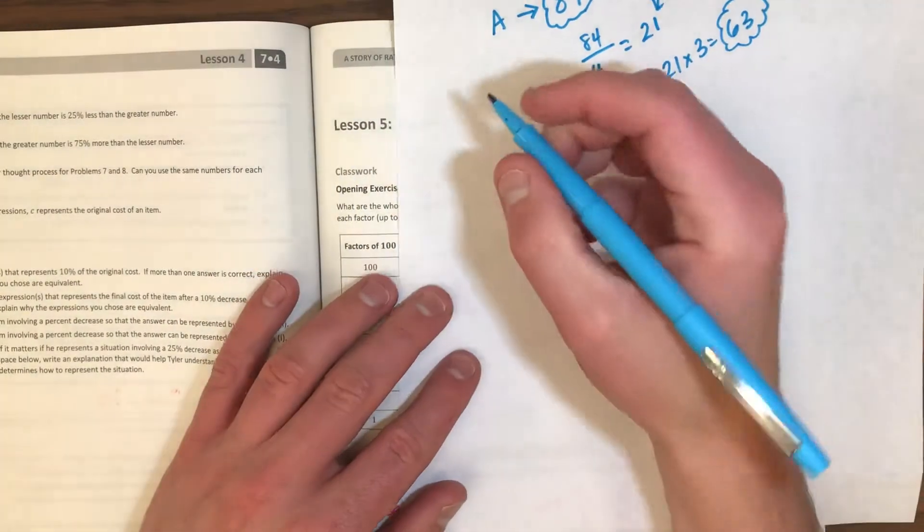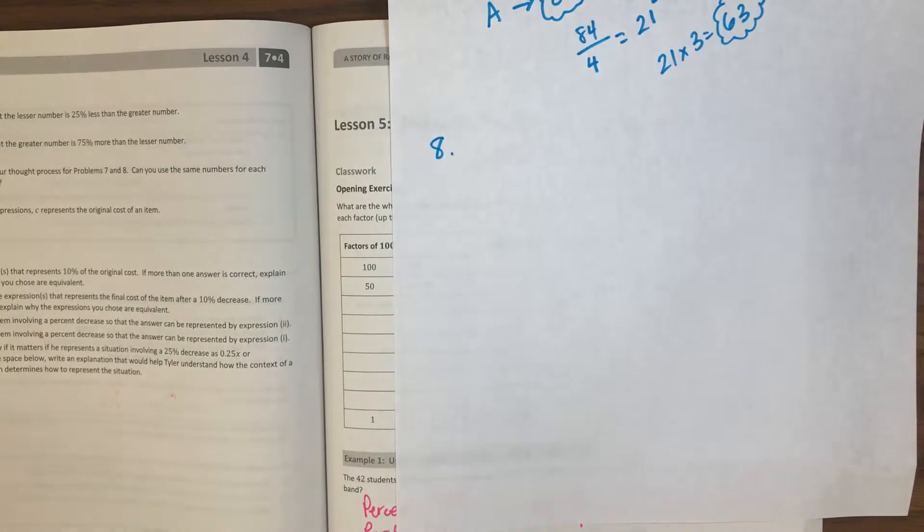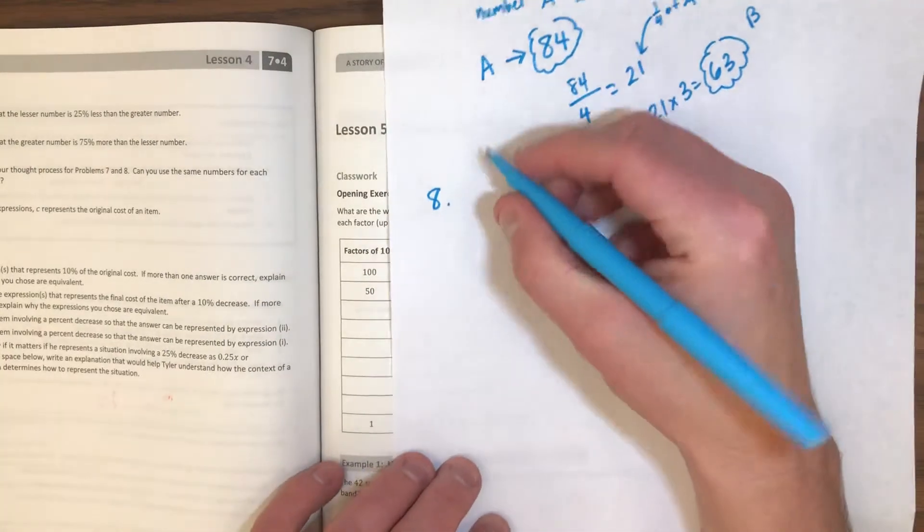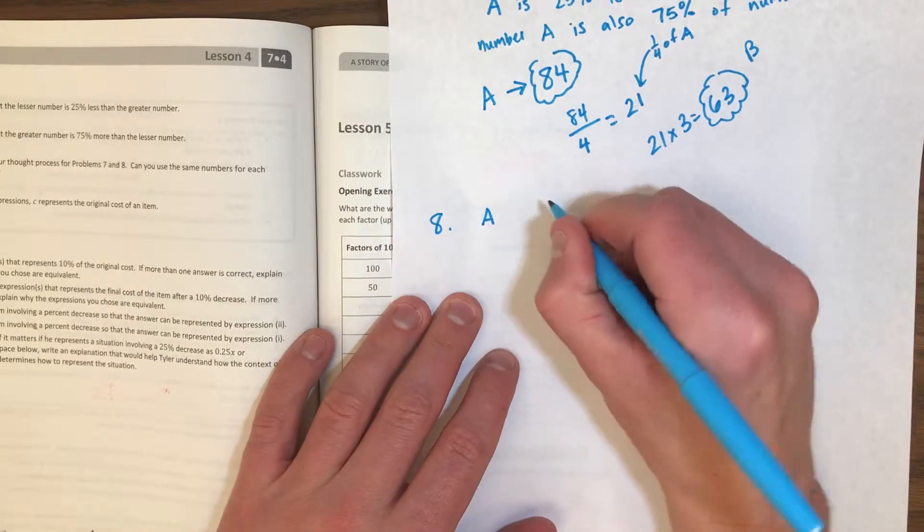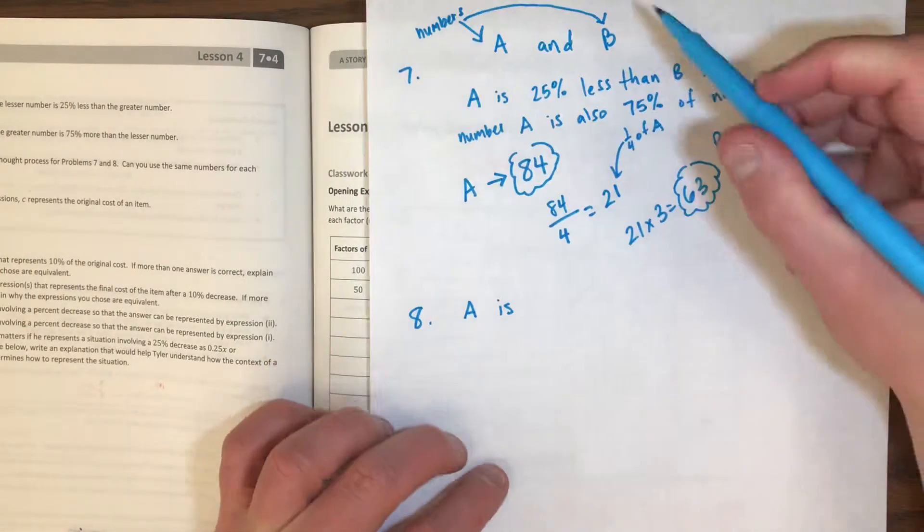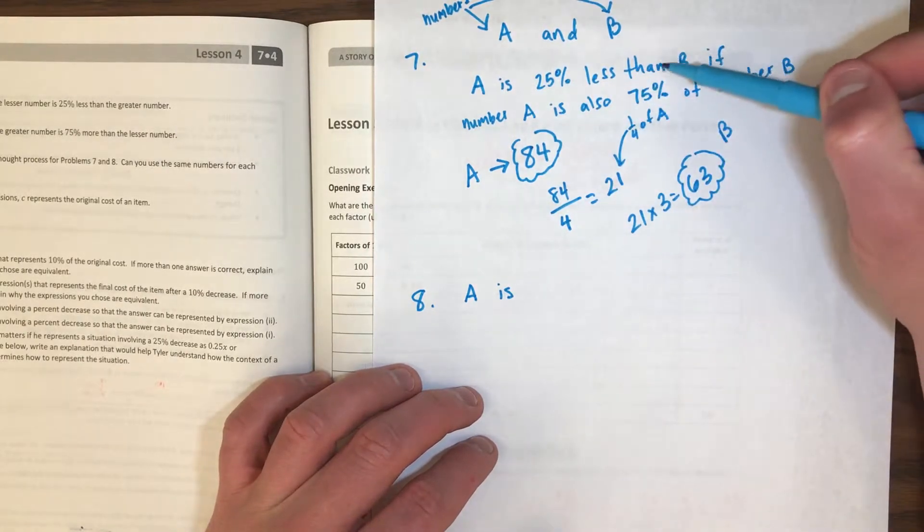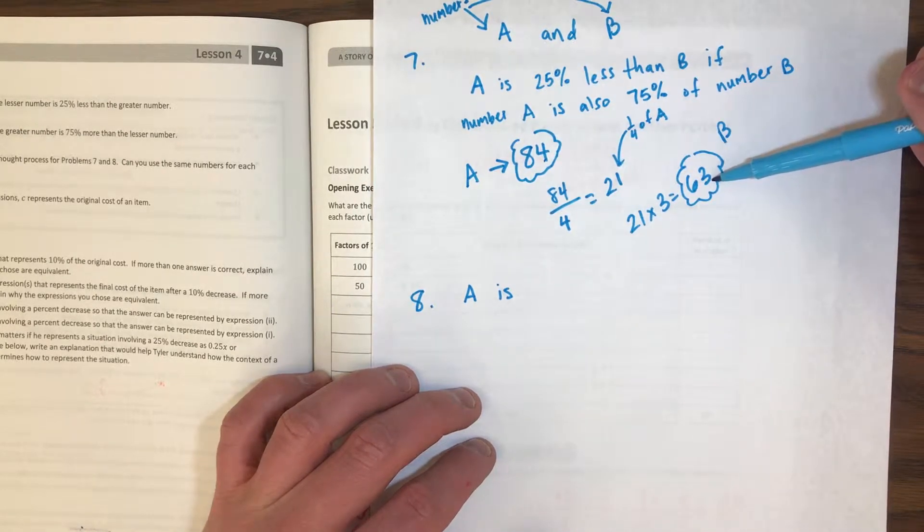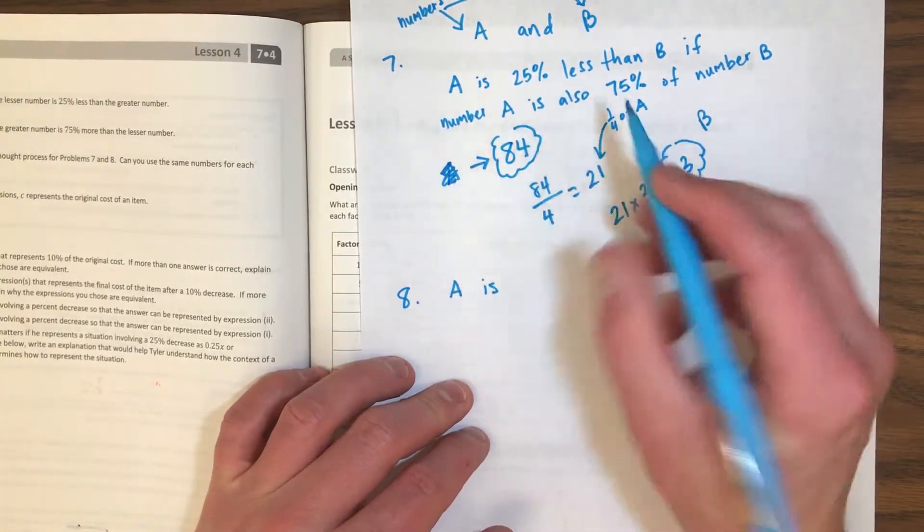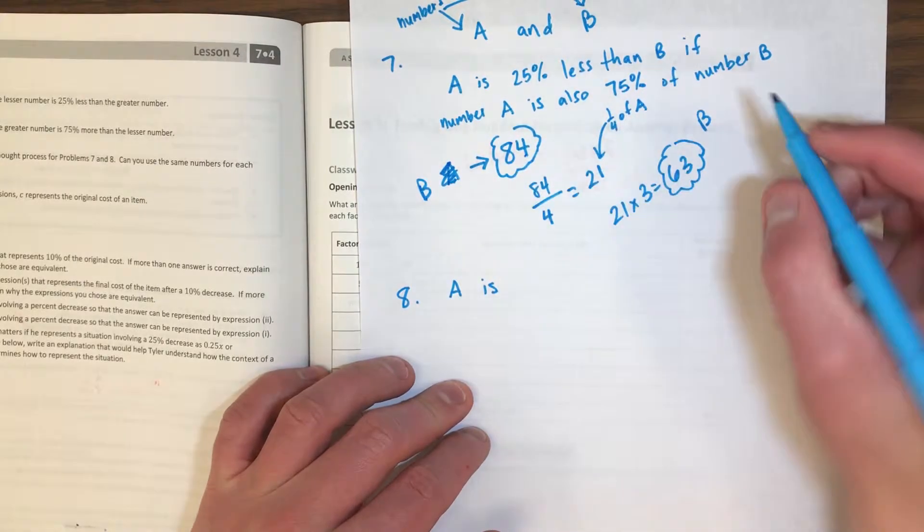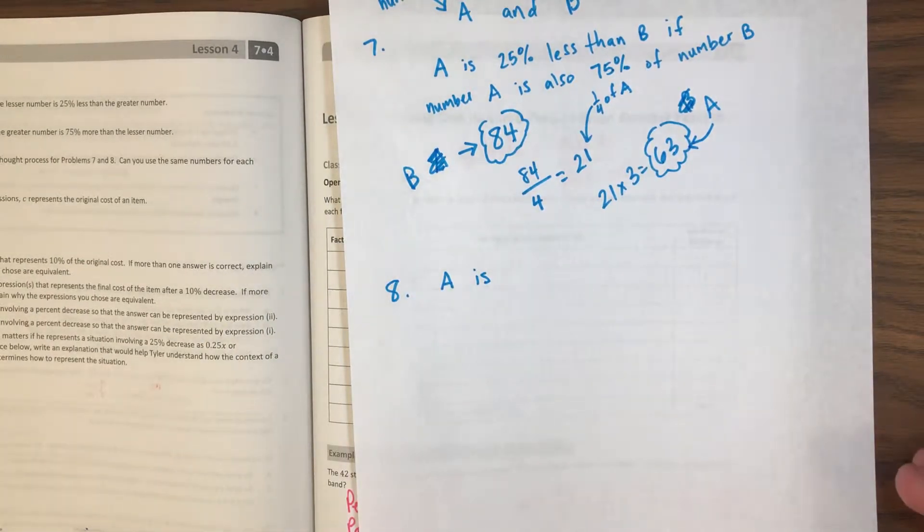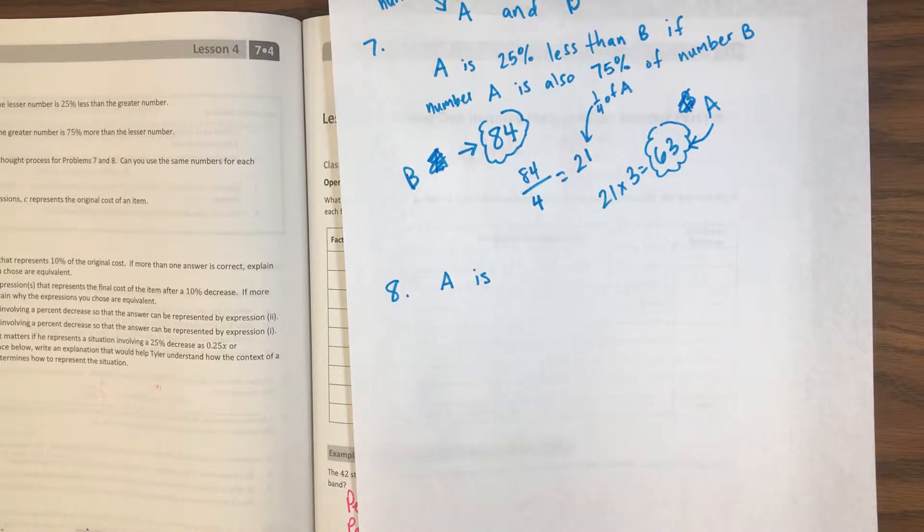And then that was number seven. Number eight says: State two numbers such that the greater number is 75% more than the lesser number. So that's the same thing. Let's say I have a number A. I just realized that the way I wrote this - I said A is 25% less than B if number A is also 75% of number B, but then I kind of switched them around. I actually need A my greater number and B my smaller number. So really if I want to be consistent with the way I wrote my little note up there, this really should be B and this really should be A. That's not super important, but I'm nitpicking myself right now.